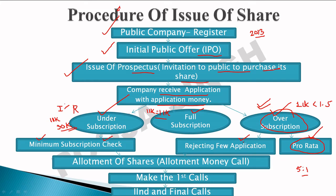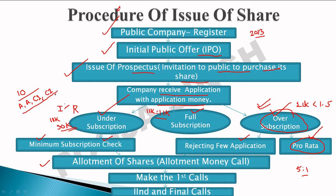After subscription, the next stage is the allotment of shares. The company calls allotment money. The company does not call the full face value at once — for example, if a share is 10 rupees, it is not demanded all at once. Instead, the company calls money in installments: some at the application stage, some at the allotment stage, then first call, second call, and so on.